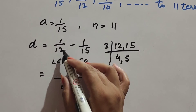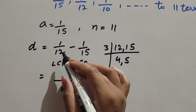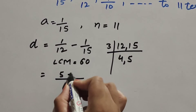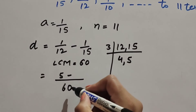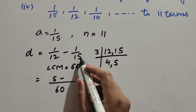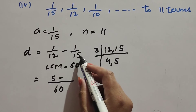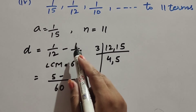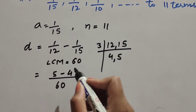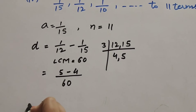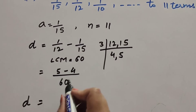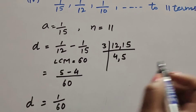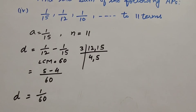With LCM 60: (60÷12)×1 = 5, and (60÷15)×1 = 4. So d = (5 − 4)/60 = 1/60. Common difference d is equal to 1/60. We now find the sum of 11 terms using the formula Sₙ = n/2 × (2a + (n−1)×d).